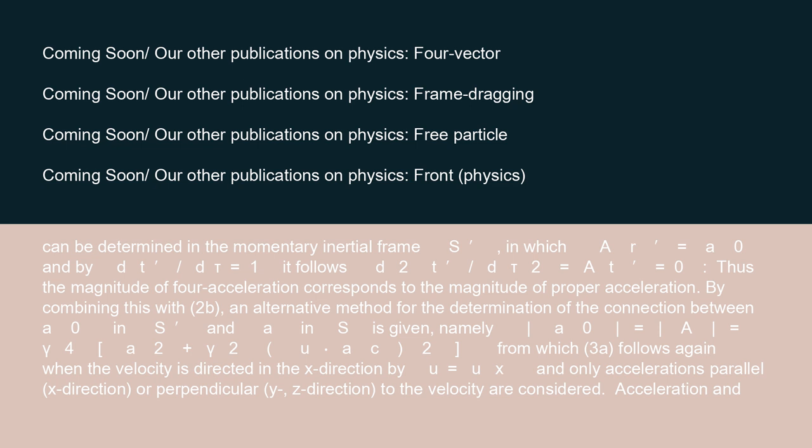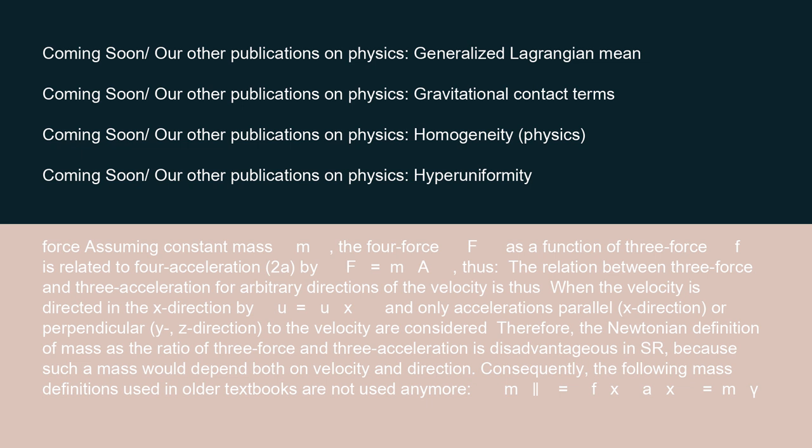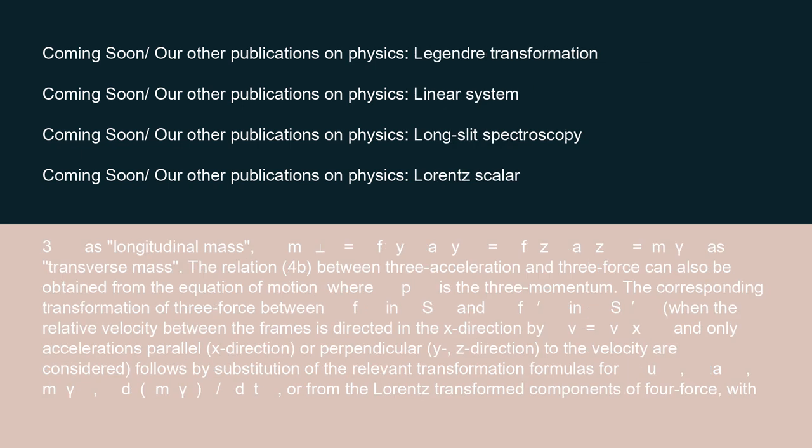Acceleration and force — assuming constant mass M: The four-force F as a function of three-force F is related to four-acceleration by F equals MA. Thus, the relation between three-force and three-acceleration for arbitrary directions of the velocity, when directed in the X direction and only accelerations parallel (X-direction) or perpendicular (Y′, Z-direction) to the velocity are considered, shows that the Newtonian definition of mass as the ratio of three-force to three-acceleration is disadvantageous in S.R., because such a mass would depend both on velocity and direction. Consequently, the following mass definitions used in older textbooks are not used anymore: M_longitudinal equals FX/AX equals M·gamma³ as longitudinal mass, and M_transverse equals FY/AY equals FZ/AZ equals M·gamma as transverse mass.